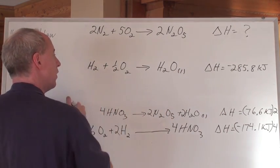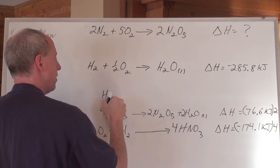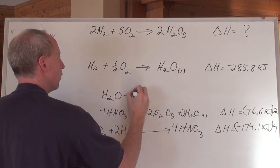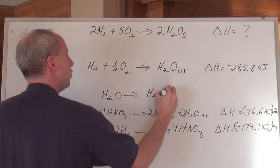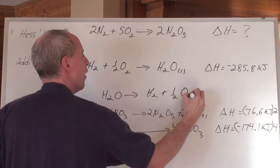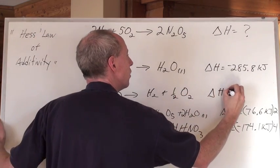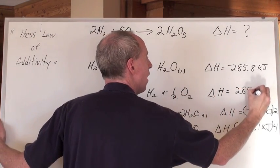I've got to get the water over here. So I'm going to take H2O right there and I'm going to reverse this reaction to make H2 plus one half O2 and the delta H is going to equal positive 285.8 kilojoules.